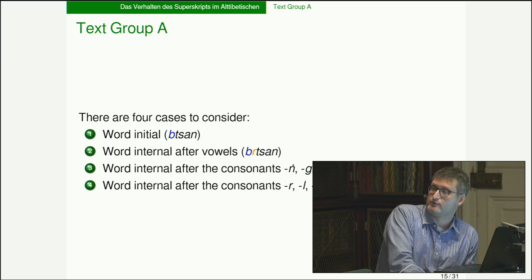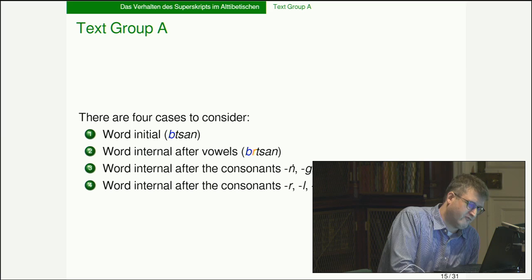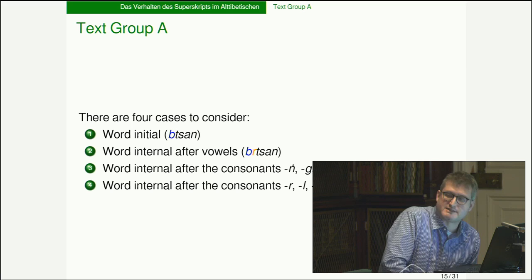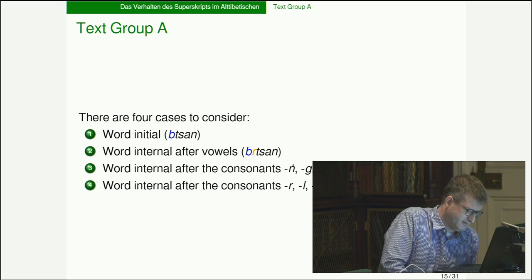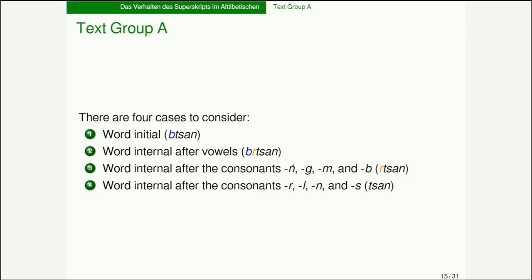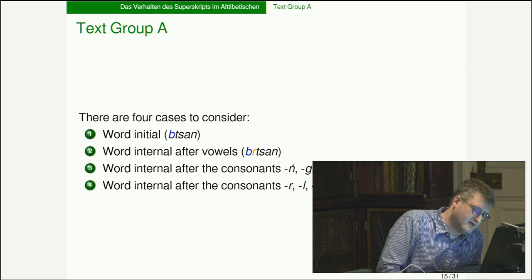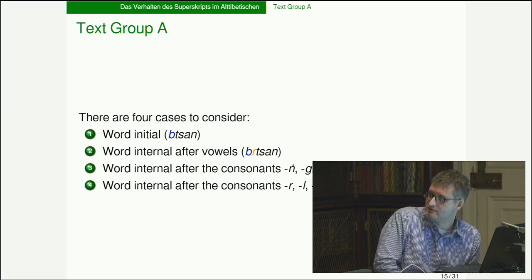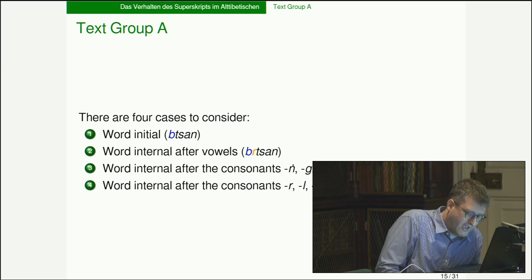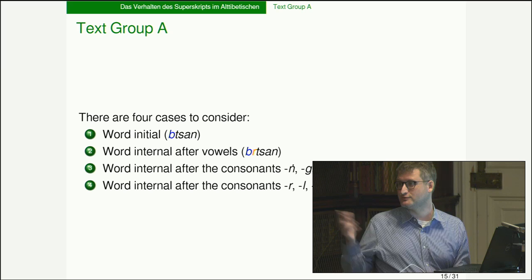In text Group A there are four cases: word-initial gives 'btsan' (same as Group B); word-internal after vowels gives 'brtsan'; word-internal after the consonants ng, g, b, and m gives 'rtsan'; and word-internal after the consonants r, l, n, and s gives 'tsan' with no 'b' and no 'r.' These consonant sets form natural phonological classes — the first are grave and the second acute, in Jakobson's terminology.